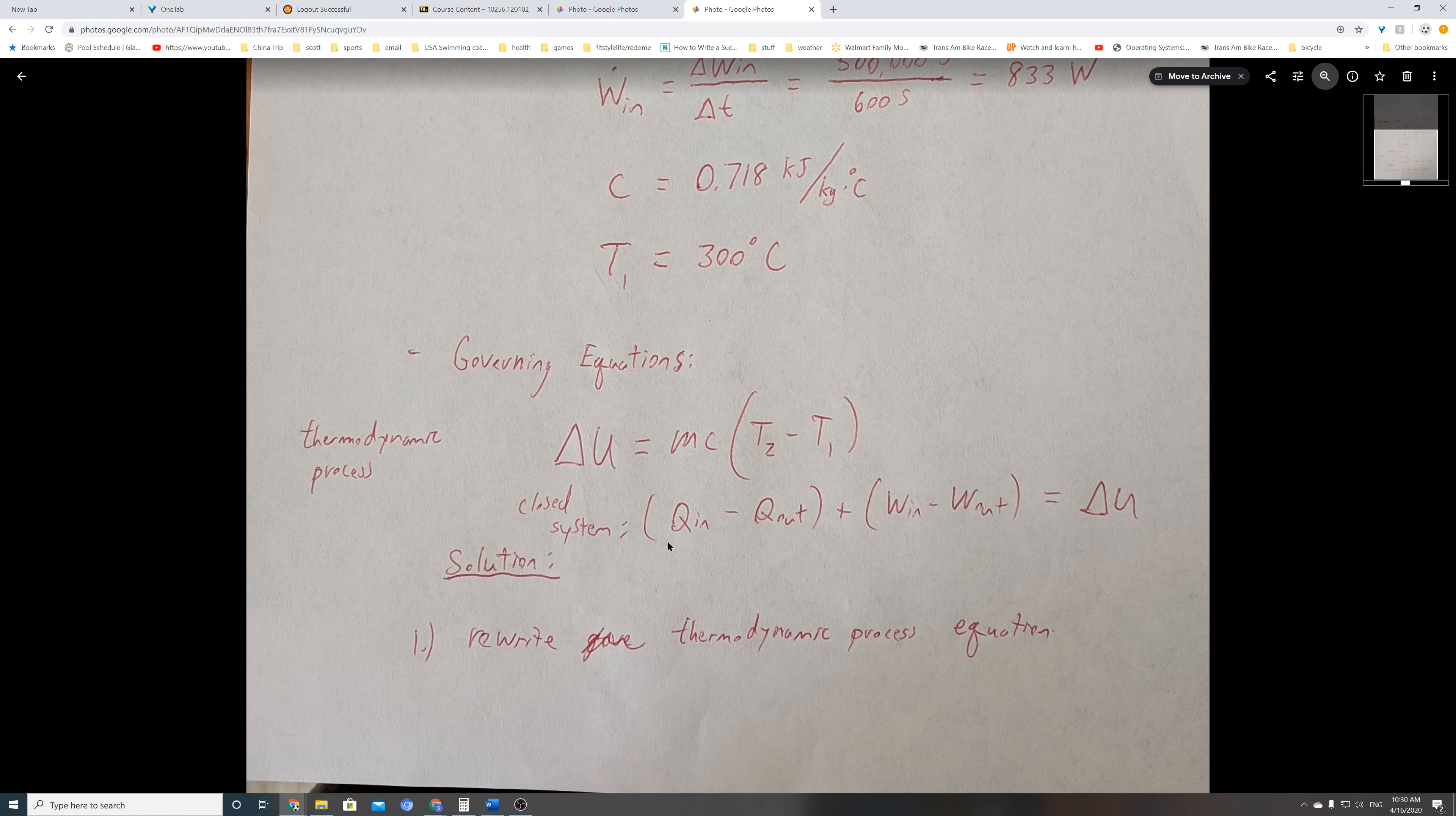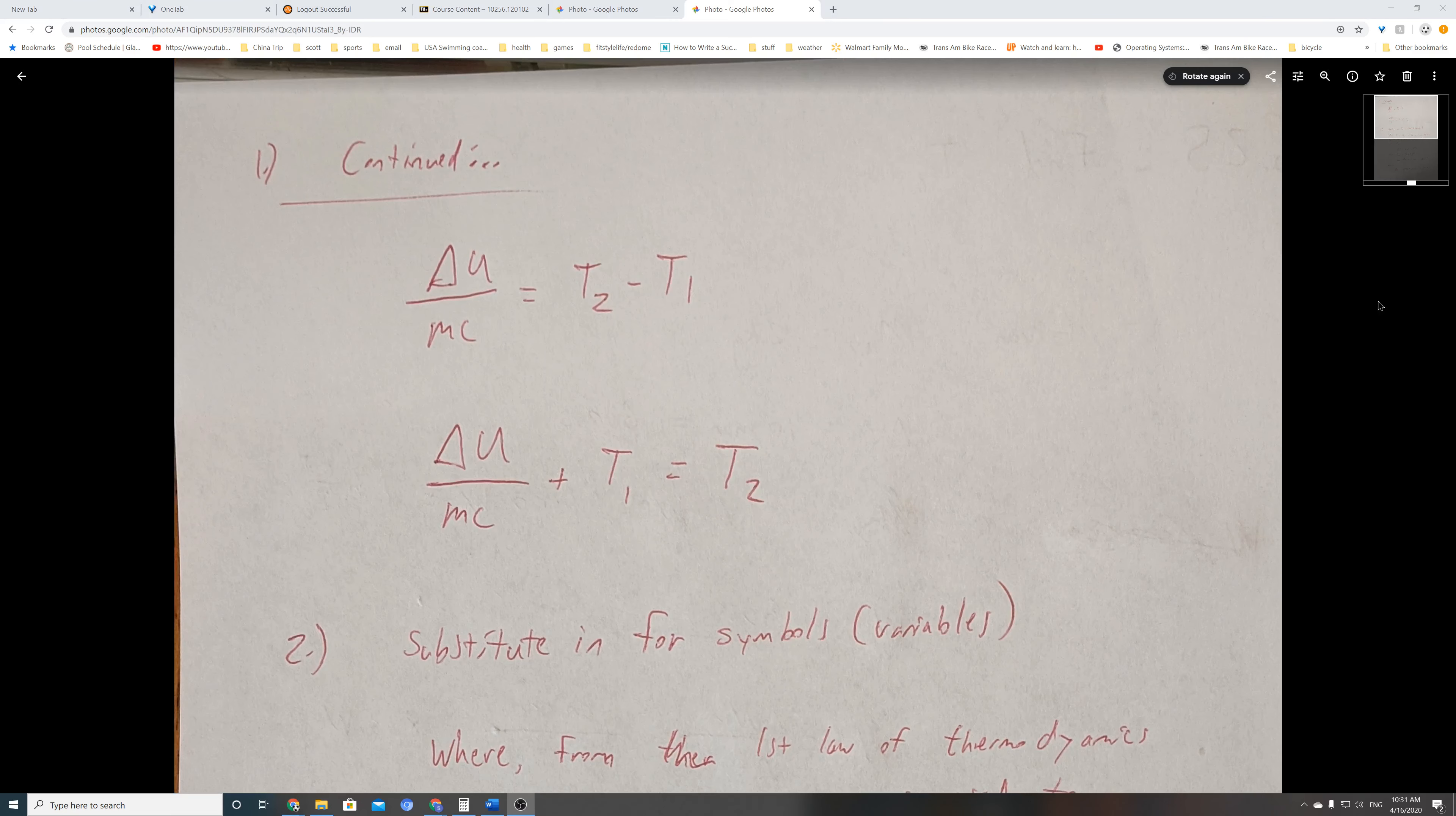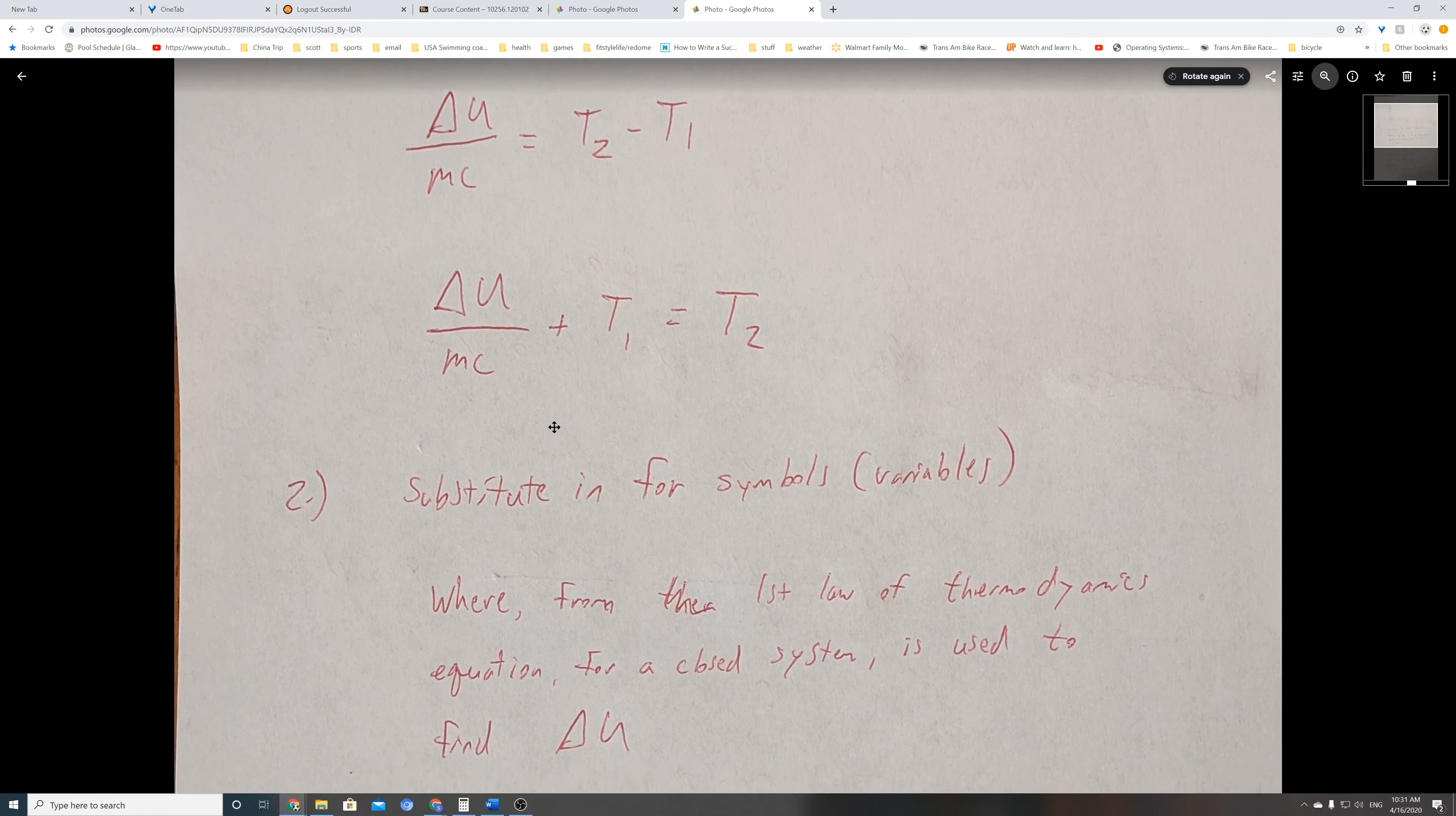I took the thermodynamic process equation and rewrote it. I divided both sides by MC. Delta U over MC equals T2 minus T1. Then I add T1 to both sides, and now I have T2 separate by itself.